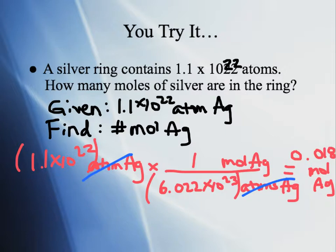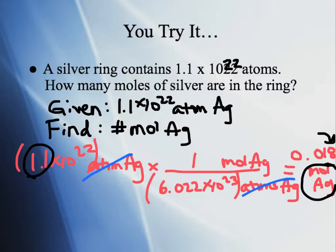Putting that in our calculator — always put these numbers in parentheses — we do 1.1 times 10 to the 22nd divided by 6.022 times 10 to the 23rd, and we get 0.018 moles of silver. Let's check: we start with 2 sig figs and have 2 sig figs in the answer — good. We have units: moles of Ag — good. Does the number make sense? We start with a smaller number times 10 to the 22 and divide by a bigger number times 10 to the 23, so we expect a decimal less than 1 — and indeed 0.018 moles of silver makes sense.